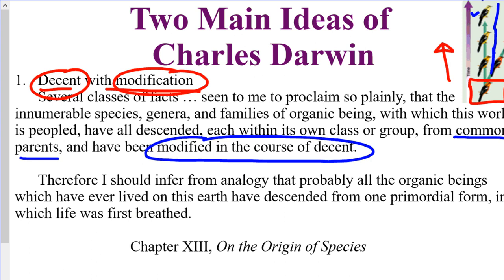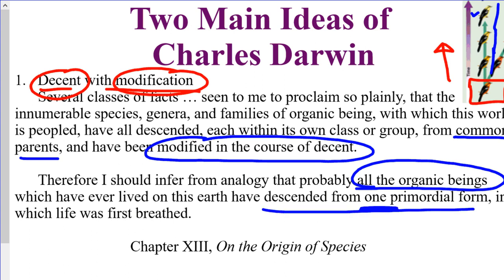He also says that not only in the case of these birds, but if we go far enough back in time, then all organic beings — every single living organism on the planet — would have descended from one primordial form into which life was first breathed. He would have had no idea when that actually was, but now we know that is around 3.5 billion years ago.